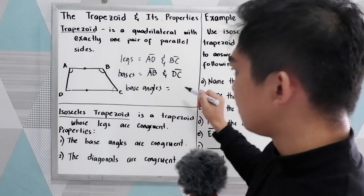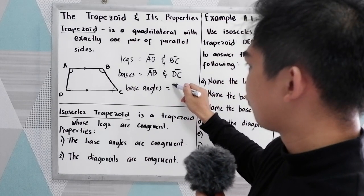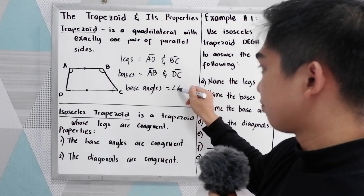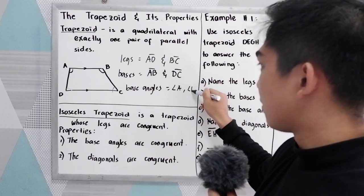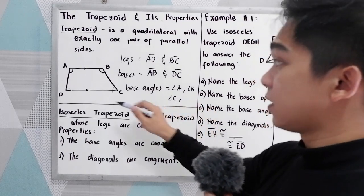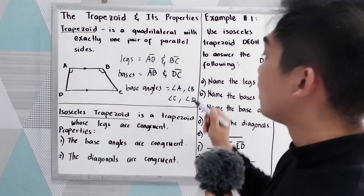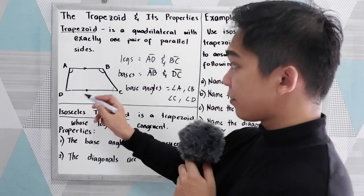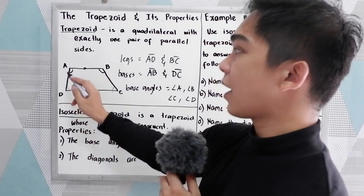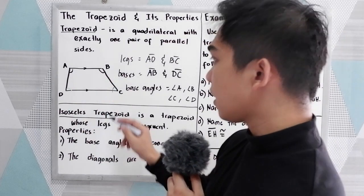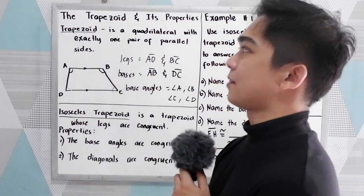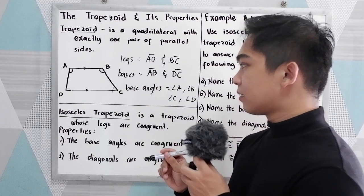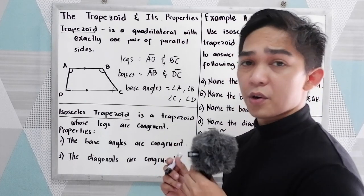In this case, we have angle A, angle B, angle C, and angle D. If you want to name them using three letters, we have angle BAD, angle ABC, angle BCD, and angle CDA. Those are the legs, bases, and the base angles — the parts of our trapezoid.